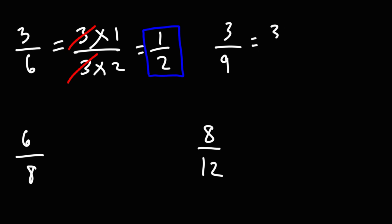For 3 over 9, 3 is basically 3 times 1. 9 is equal to 3 times 3. Notice that we can cross out a 3, and we're left with 1 over 3. So that's the answer for the second example.